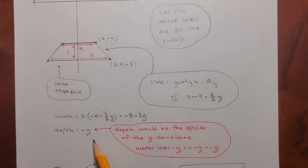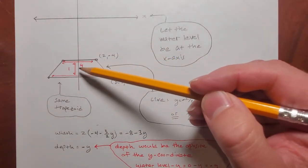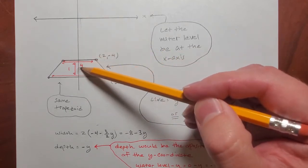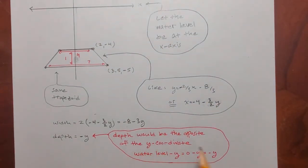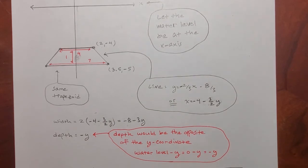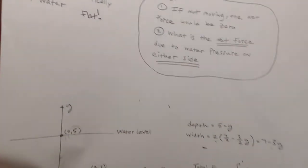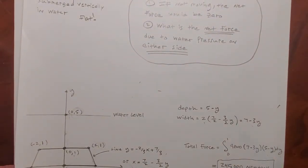And then the depth is going to be negative y. You know, the depth at like this point, you know, how far it is under the water, it's going to be the opposite of the y-coordinate.